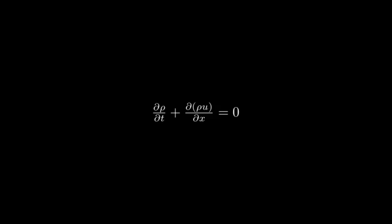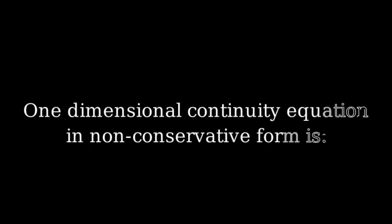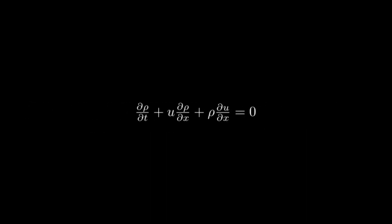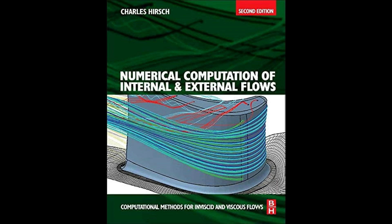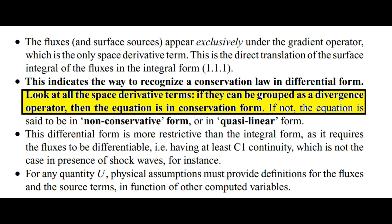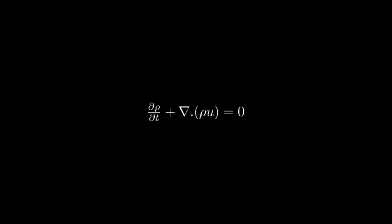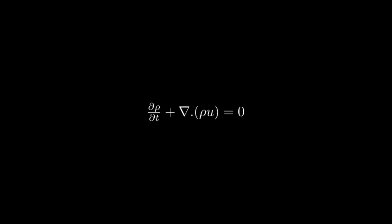The one-dimensional continuity equation in conservative form is shown here. Similarly, the non-conservative form is shown. The definition of conservativeness, as per the book 'Numerical Computation of Internal and External Flows' by C. Hirsch, is: look at all the space derivative terms — if they can be grouped as a divergence operator, then the equation is in conservation form. The continuity equation has temporal and spatial terms. If we can club the spatial terms in the divergence operator, we can call it the conservative form.